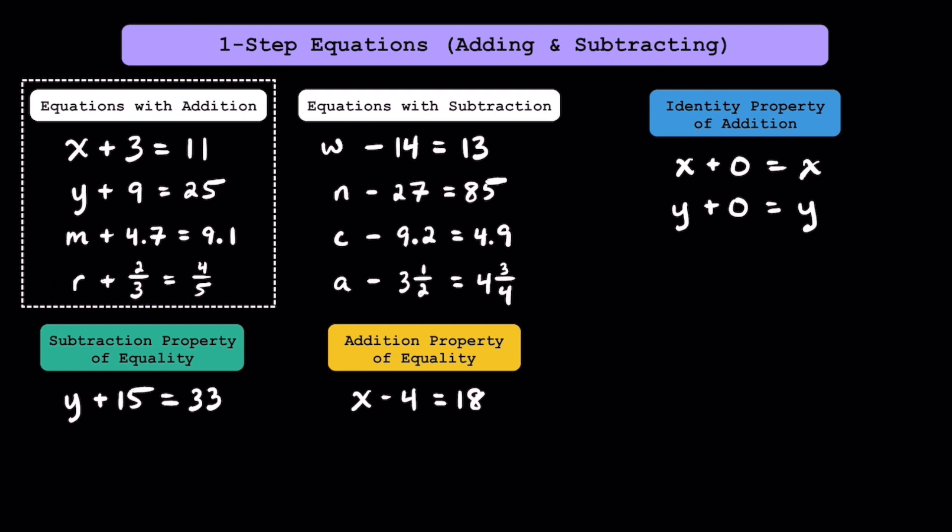To solve any equation that has addition, you can use the subtraction property of equality. The subtraction property of equality states that if you subtract the same number from both sides of an equation, you don't change the value.